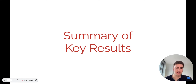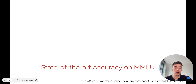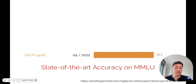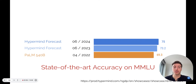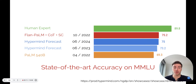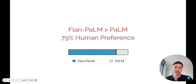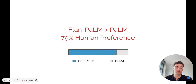Let me quickly summarize these key results. First, our model achieves a new state-of-the-art performance on the Multitask Language Understanding Benchmark, MMLU. It beats the previous state-of-the-art model, PaLM, as well as Hypermind's forecast estimates for what models would achieve on this task by the summers of 2023 and 2024. For the second key result, our best model significantly improves human usability. On challenging questions, annotators preferred Flan-PaLM's responses to PaLM's responses on 79% of all examples.